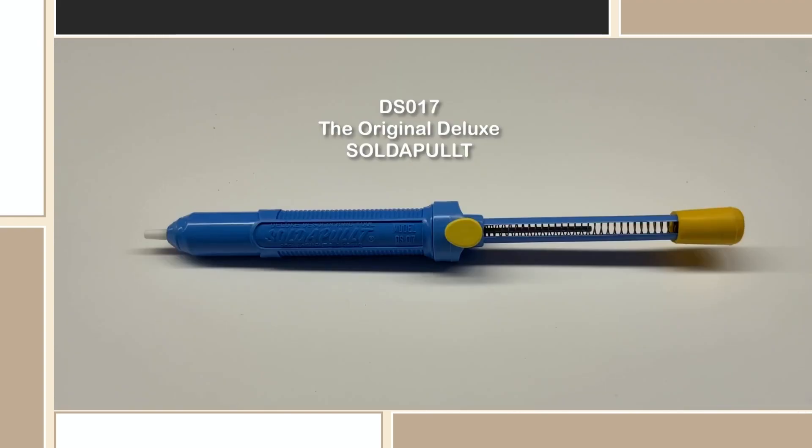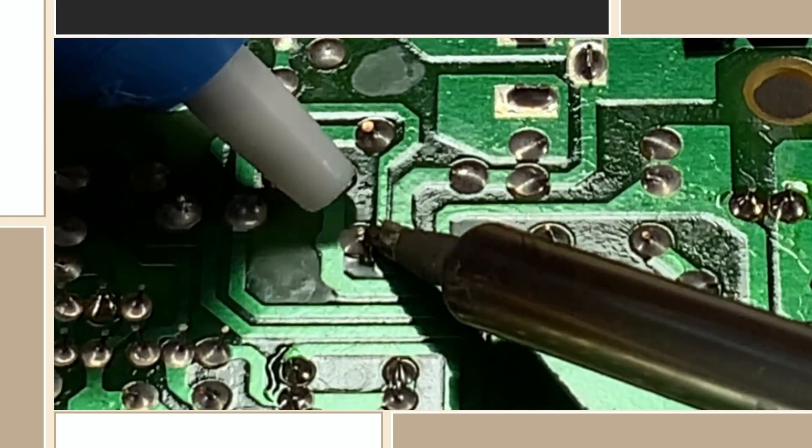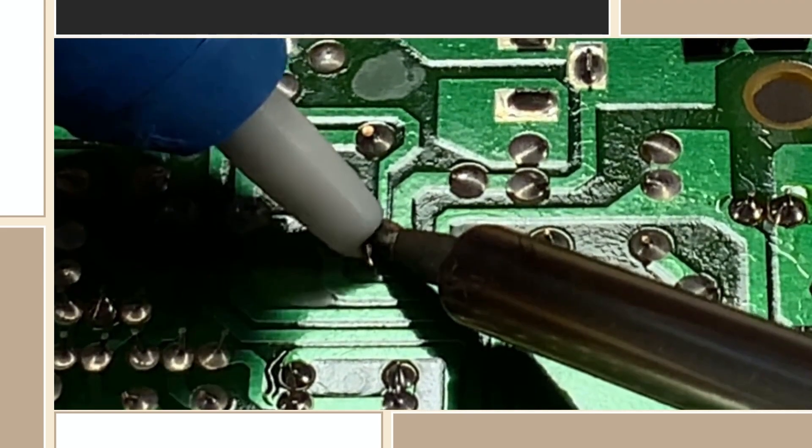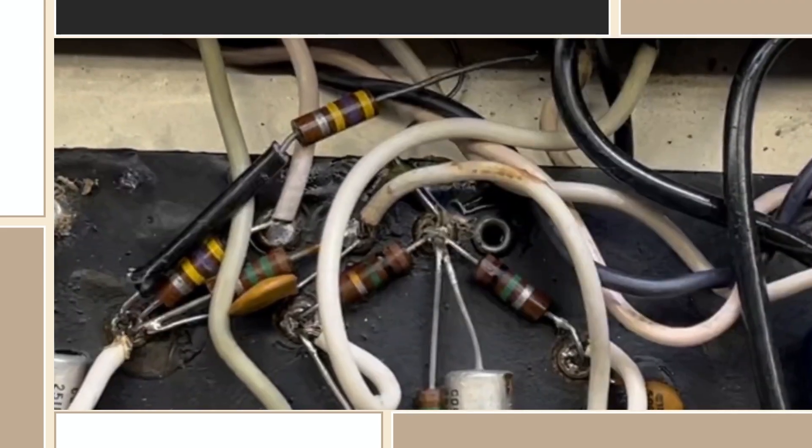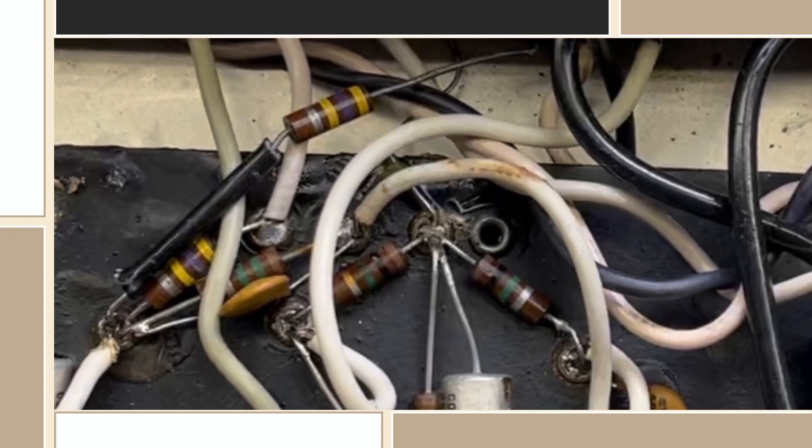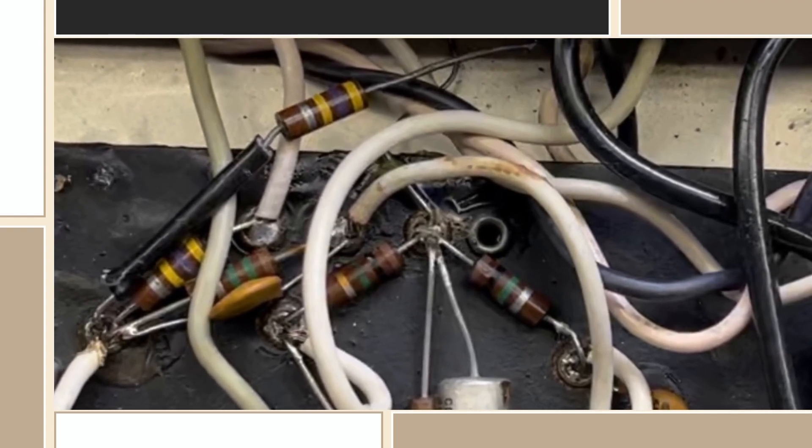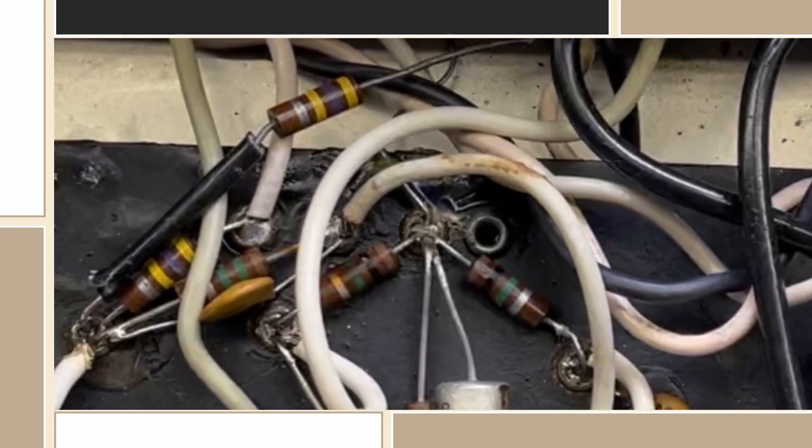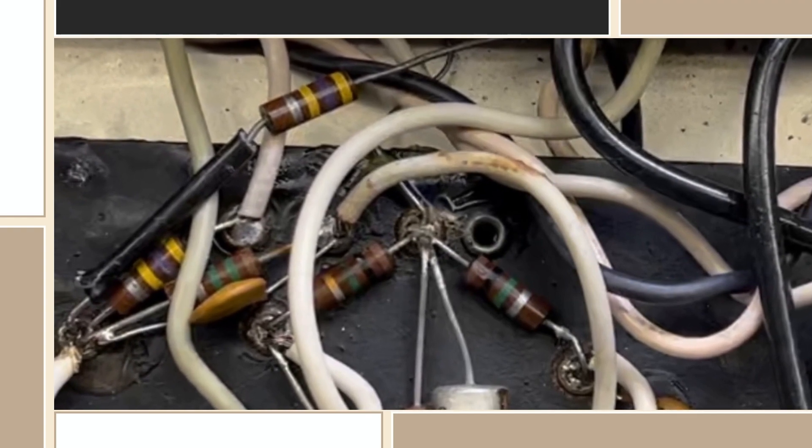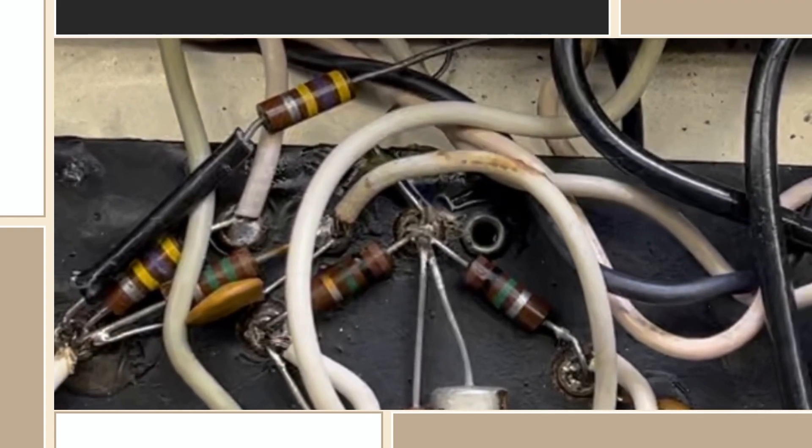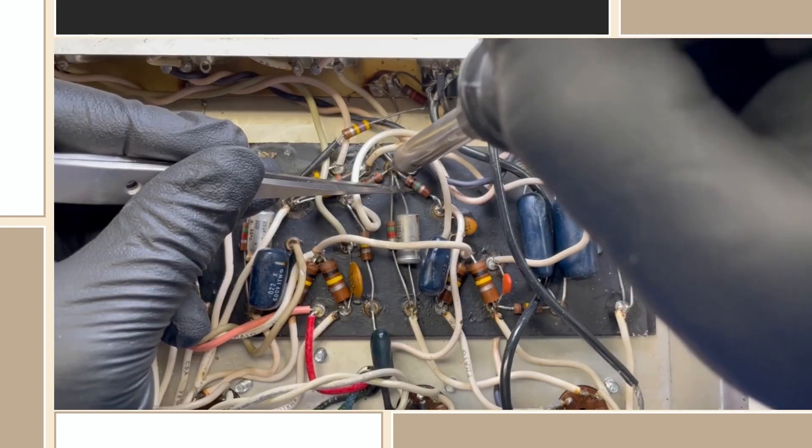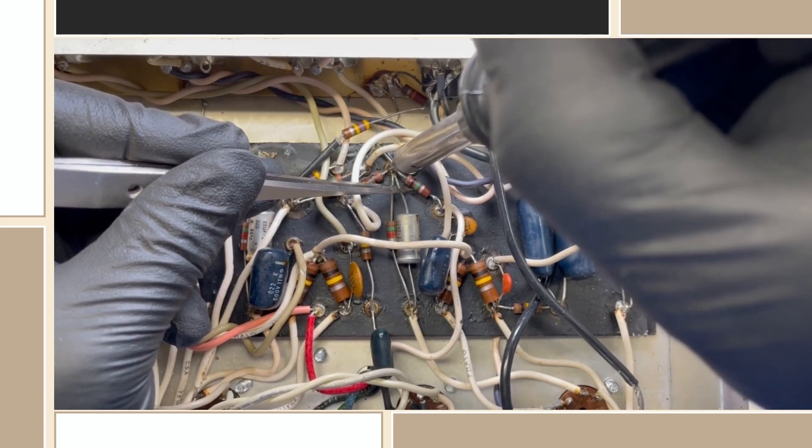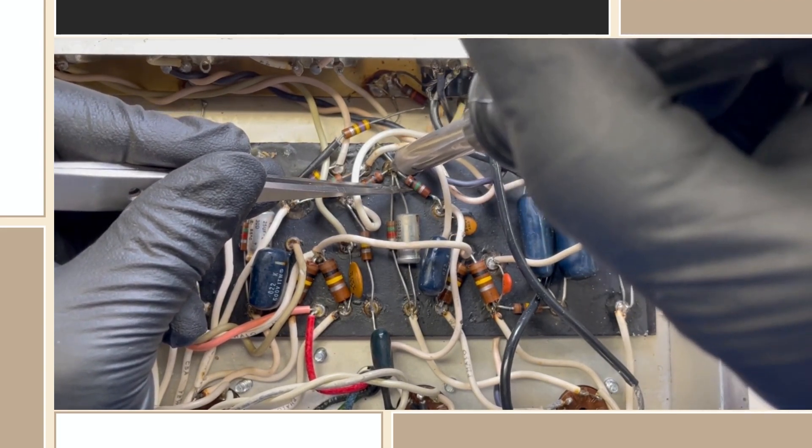A desoldering tool is used to remove the solder from a circuit pad and component lead. However, when you have multiple leads in one eyelet, it might be difficult to remove enough solder from all the leads and eyelet to be able to remove the lead of a component to be replaced. In this case, it's probably best to reflow the solder and, while still molten, remove the lead.